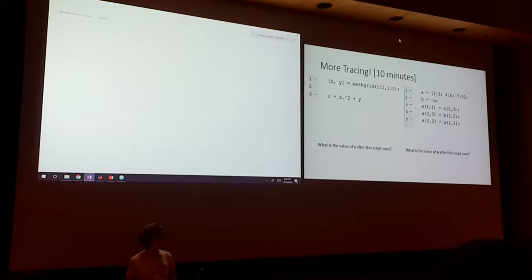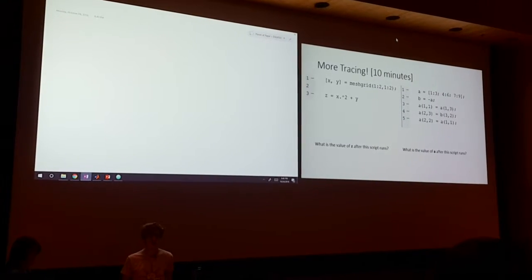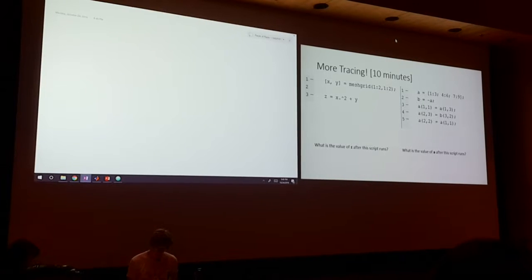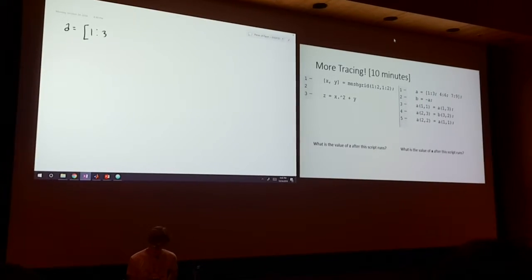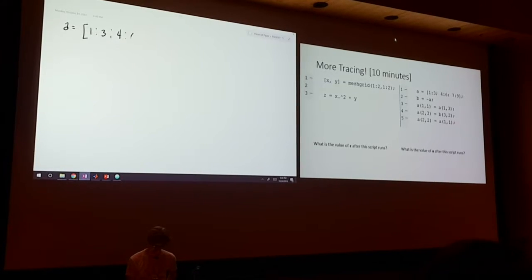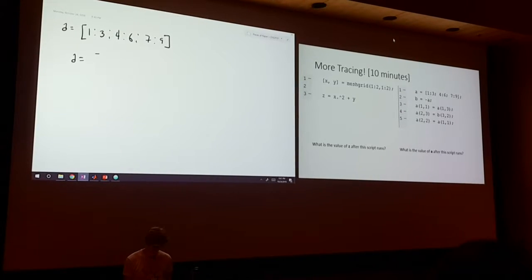So, what we're going to do is trace this problem on the right here. We're going to start off just the same way we do everything. We just go along by line and write out each step. So, here we're saying A is equal to 1 to 3 on top of 4 to 6 on top of 7 to 9. And we saw one exactly like this, so really quickly we know exactly what this is going to look like.